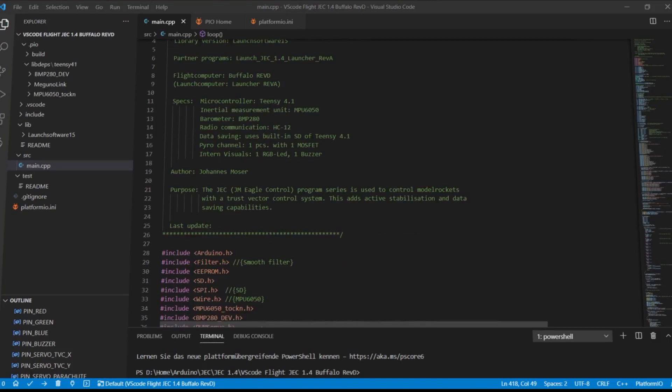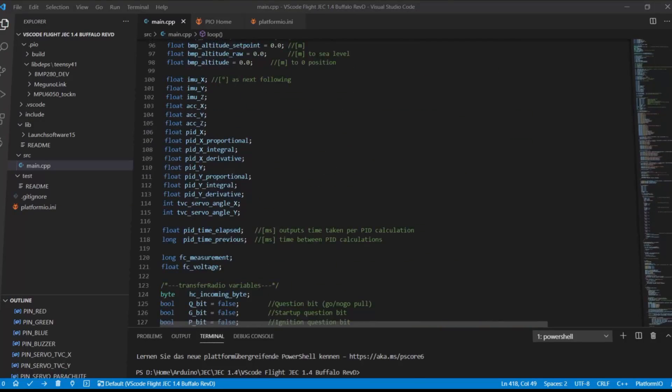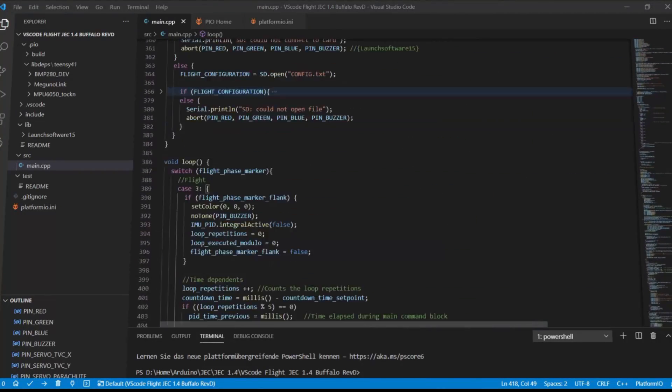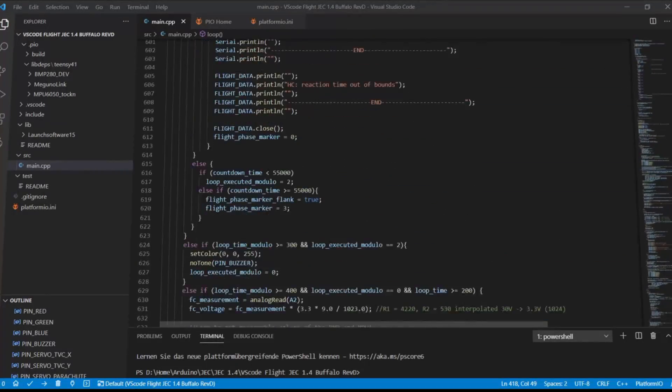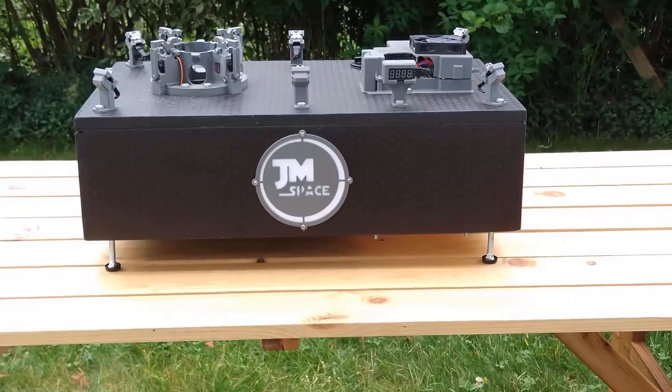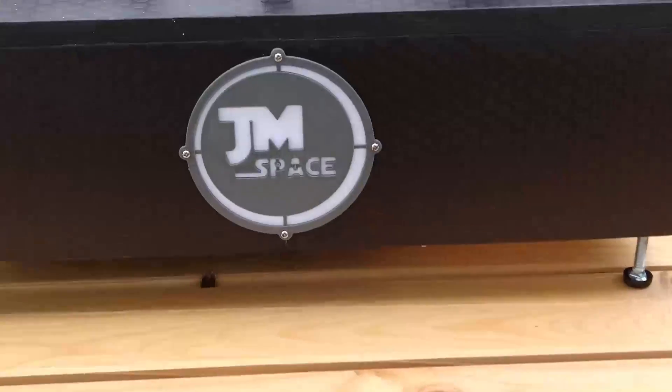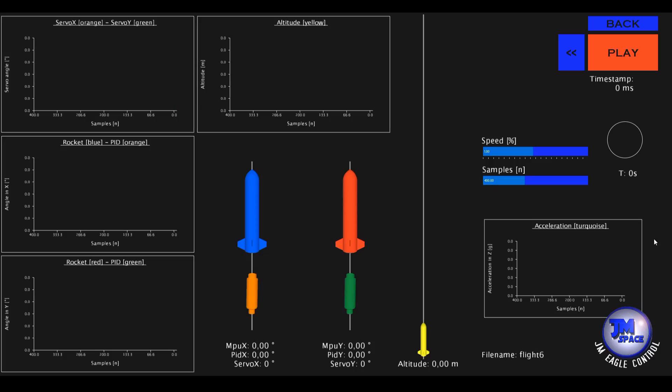Next up was the software which was completely rewritten with the focus on clarity and simplicity of the code. Last thing was to build the launch pad and to design other related parts. Only the GUI was adapted from the last rocket.